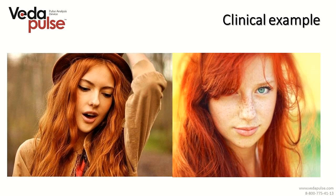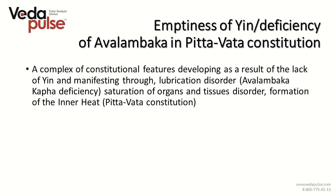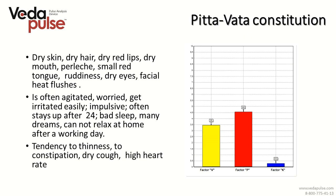They start suffering from dryness of eyes and use remedies to moisten them. When reciting or talking for a long time, dryness appears in the throat and they need to drink water to remove it. You may notice these people have pink or red ruddiness of the face — sometimes women try to camouflage it. This syndrome is defined as a complex of constitutional features developing from the lack of yin, manifesting through lubrication disorder, Avalambaka Kapha deficiency, saturation of organs and tissues disorder, and formation of empty inner heat. Dryness manifests on different levels: skin, hair with excessive hair loss, lips, purlieus in the corners of lips, mucosa, bronchial tree with dry coughing, and gastrointestinal and urogenital tracts.